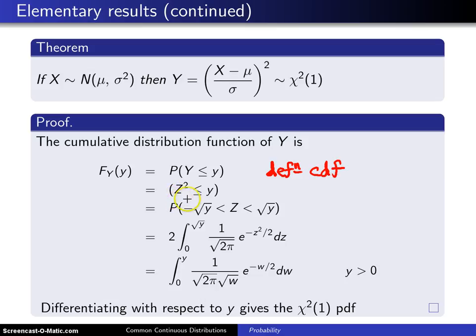Next, we replace Y with Z². We know from the previous result that Z has the standard normal distribution. Using the definition of Y, this is the same as a standard normal squared being less than or equal to y.